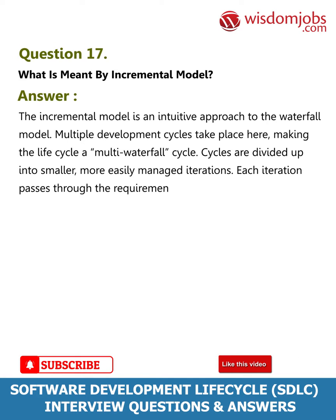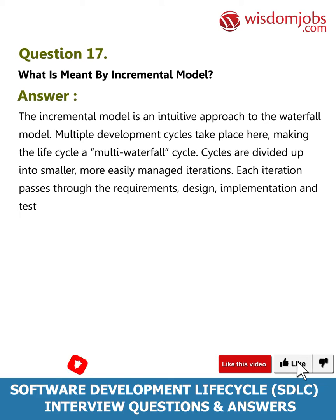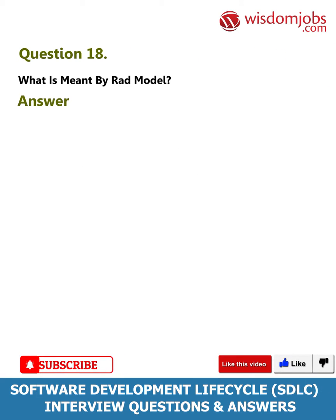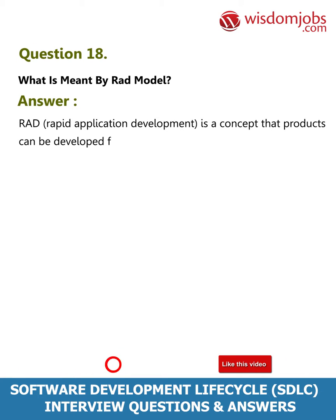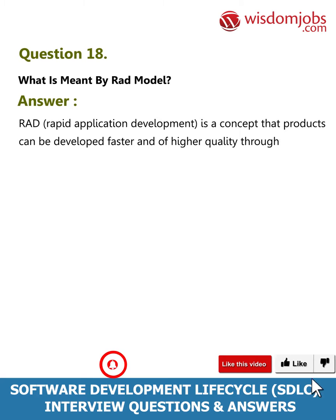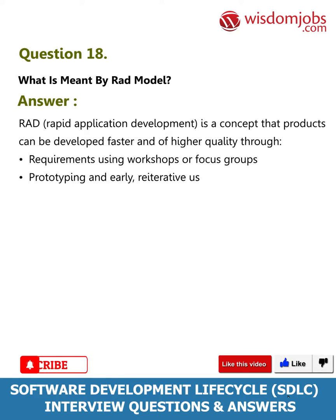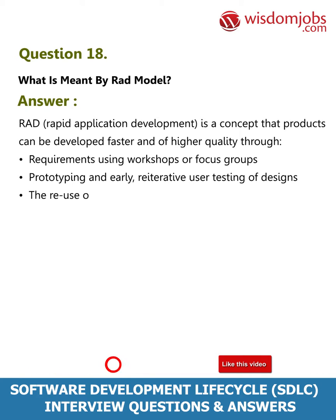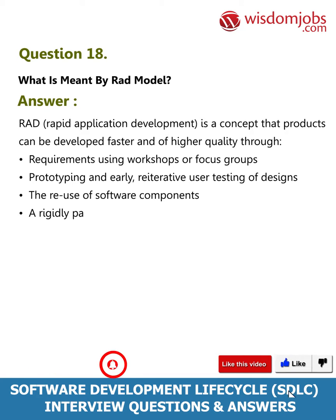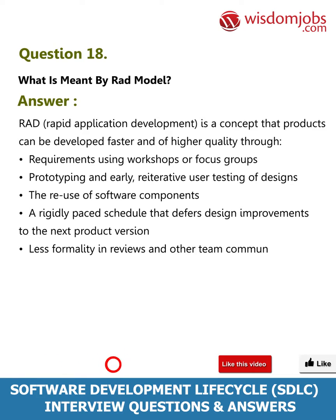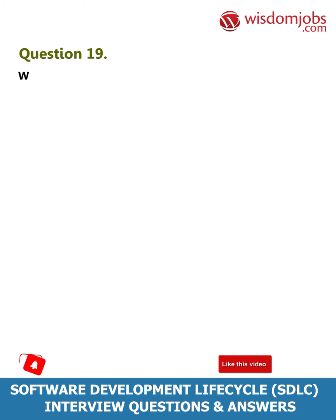Each iteration passes through the requirements, design, implementation, and testing phases. Question 18: What is meant by RAD model? Answer: RAD (Rapid Application Development) is a concept that products can be developed faster and of higher quality through requirements using workshops or focus groups, prototyping, early reiterative user testing of designs, reuse of software components, a rigidly paced schedule that defers design improvements to the next product version, and less formality in reviews and other team communication.